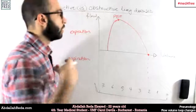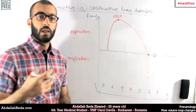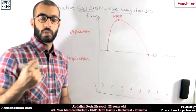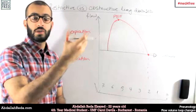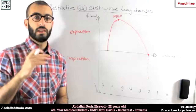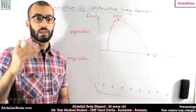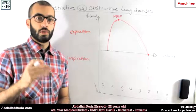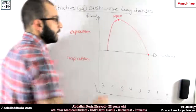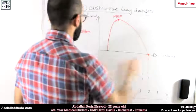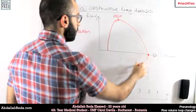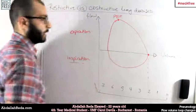The point corresponding to around two liters is the moment that the volume of air inside the lungs reaches the residual volume. So all of the air taken in during inspiration is now outside, and only the air that remains in the lung is what we call the residual volume.